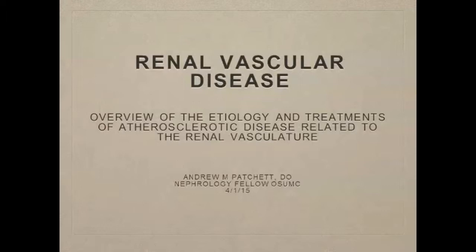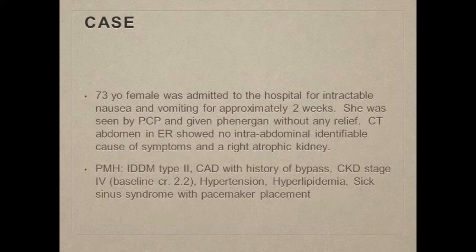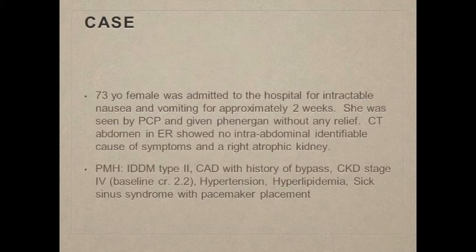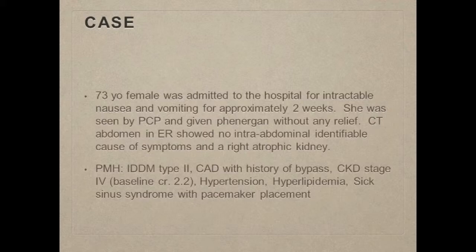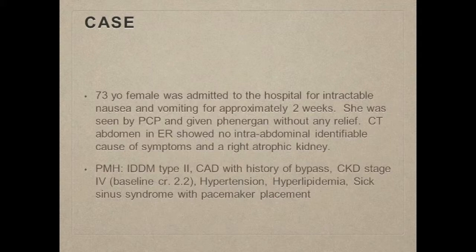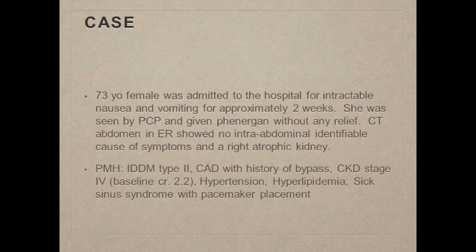Back in July of last year, my first rotation in nephrology at St. Francis, we had a 73-year-old female who was known to our clinic and had been seen in an outpatient setting. She was admitted to the hospital for complaints of intractable nausea and vomiting for about two weeks. She didn't have any abdominal pain. She went to her primary care doctor, they gave her some Phenergan which didn't provide relief, so she went to the hospital. The CT of her abdomen didn't show any acute intra-abdominal findings. There was a right atrophic kidney noted, which was not something new. She came in short of breath with edema and signs of acute kidney injury.